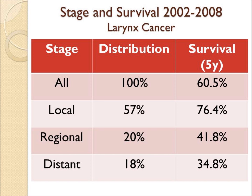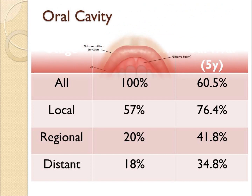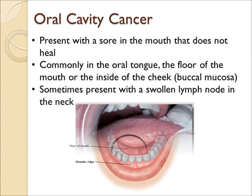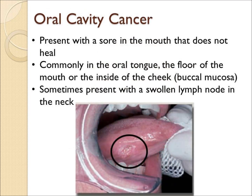The anatomy of the oral cavity or mouth is shown here. There are a number of sites that can be affected by cancer. The most common sites, however, are the tongue, the floor of the mouth, and the inside of the cheek. Most patients have a non-healing sore or ulcer in their mouth, and many patients present with swollen lymph nodes in the neck.